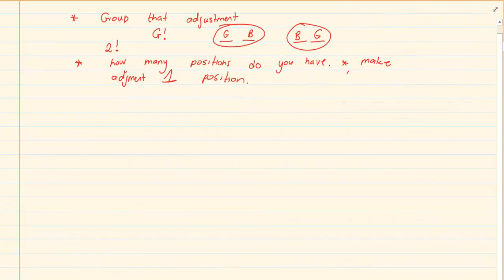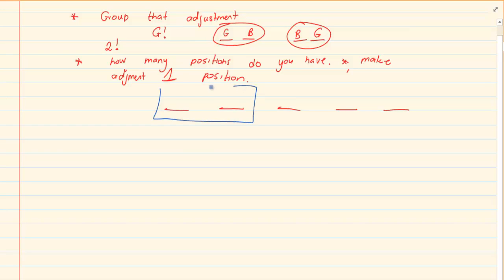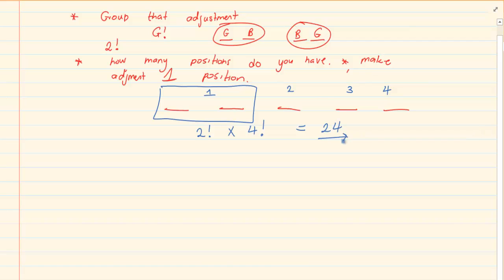We are going to group that adjustment. We initially had five positions — five people. We are going to group the couple, so that becomes one position, giving us four positions total. In the grouped position there are two people, so I say two factorial. And I times it by four factorial for the remaining positions. Using your calculator, the answer would be 24. So there are 24 different positions that they can sit in.